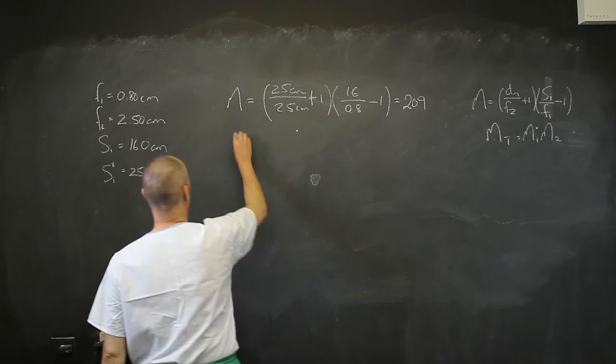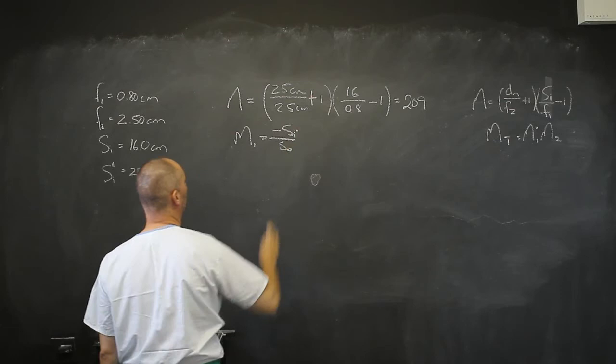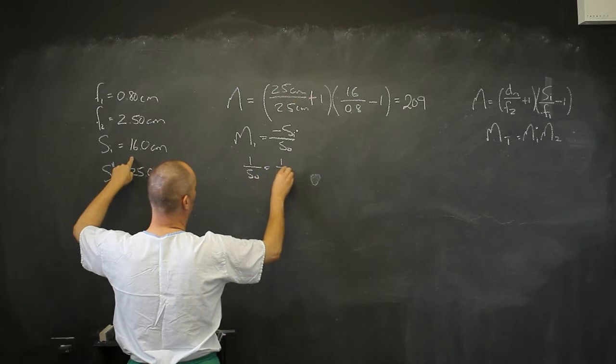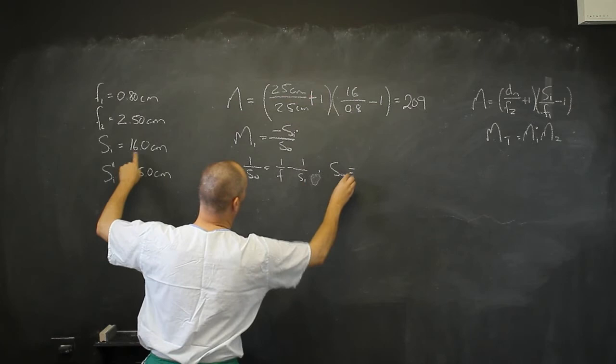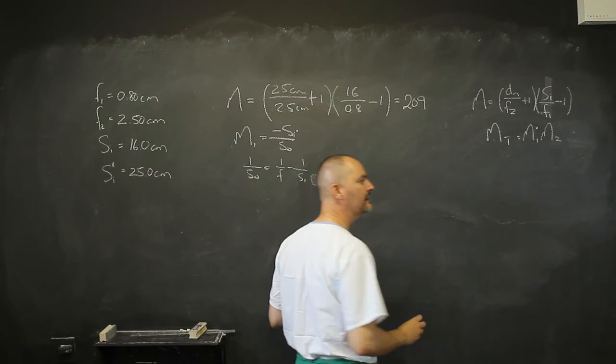I do have SI, but I don't have S0. I can very quickly get it, as much as 1 over S0 is going to be 1 over F minus 1 over SI. That gives me an S0 of, let me see, that gives me an S0 of 16 over 19.